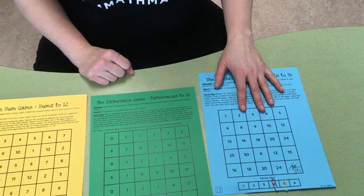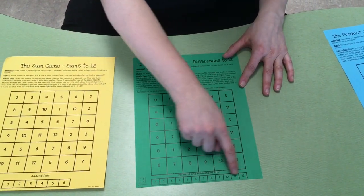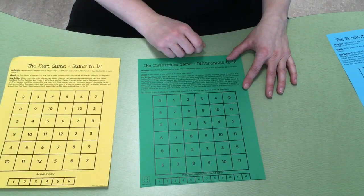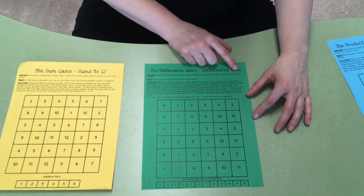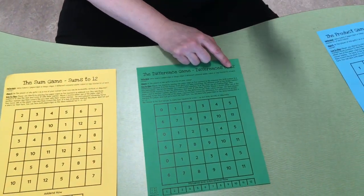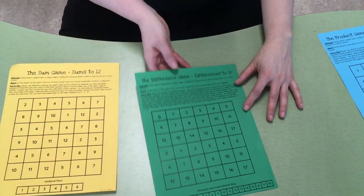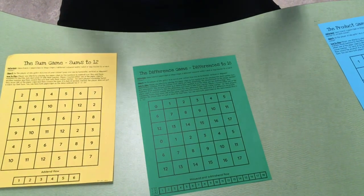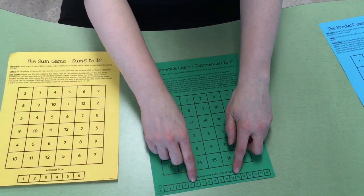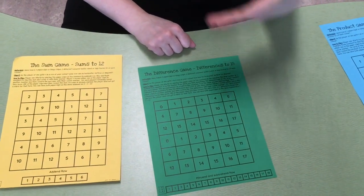We decided that we could also play this as a subtraction game. So if you notice here at the bottom, you'll see all the different numbers. This version is Difference to 12, so this would be probably good for grades one, kindergarten, grade two, maybe some grade three or four depending on their ability. And you'll notice that we also have a version, Differences to 18. And the game's played exactly the same way where you have your two paper clips and you can only move one of them at a time to change what the difference is going to be. You're still trying to get four in a row.